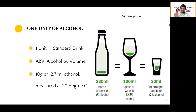30 ml of spirits equals one unit — so 30 ml of whiskey, vodka, rum, or brandy is one unit. 100 ml of wine — red or white — is one unit. For beer, 330 ml of light beer is one unit, and 170 to 180 ml of strong beer is one unit. The key numbers to remember: 30 ml spirits, 100 ml wine, 330 ml light beer.